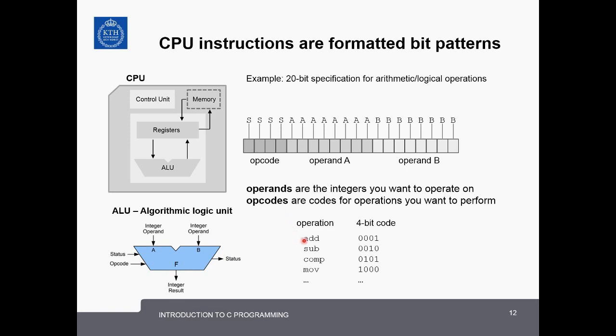The opcodes are the codes for the operations that you want to perform. For example, to add two numbers you would use the code 0001 or to subtract the numbers 0010, to compare them and to move them and so on. The operands are the integers that you want to perform the operation on. Now it's important to remember that physically these inputs are all digital circuits switched in an on or off state.